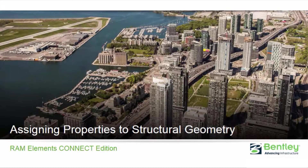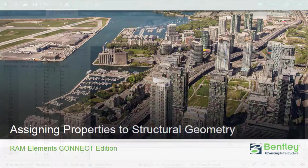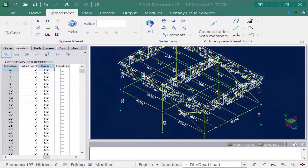Welcome to the Bentley Systems training course where you will learn how to assign properties to structural geometry using RAM Elements Connect Edition. In this video we are going to be focusing on assigning the appropriate section properties to our structural members along with their material properties. Now that we've established the descriptions for all of our structural members in a RAM Elements model, let's go forward and start assigning some section properties to both our steel and our concrete members.